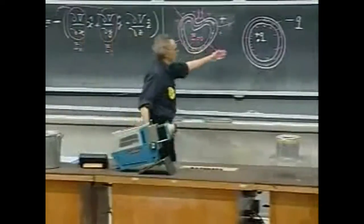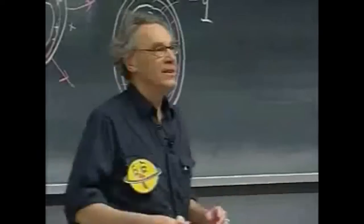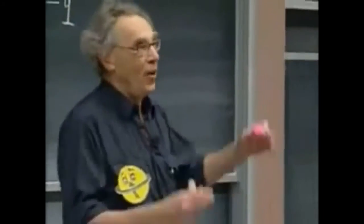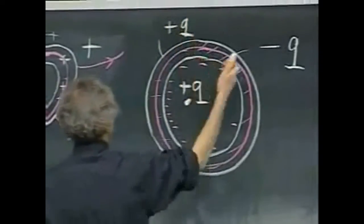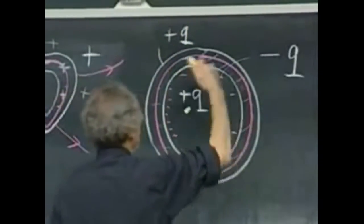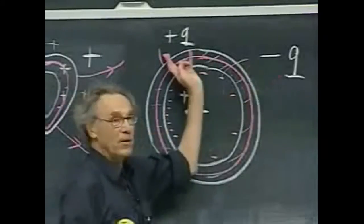Now this conductor originally was neutral. It had no net charge. So therefore on the surface of the conductor we must now see charge plus Q. Because the minus charge on the inside came from the conductor itself, and so the sum must be zero.